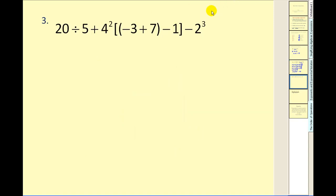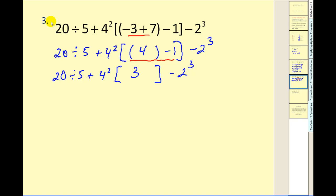Next one, we have a lot going on. Again we start with the innermost parentheses. Negative three plus seven gives us positive four. Still working within the innermost parentheses, we need to simplify this part. Four minus one gives us three. Next step, we need to simplify our exponents. Four squared is sixteen. Two cubed is eight.